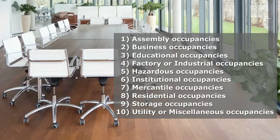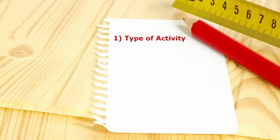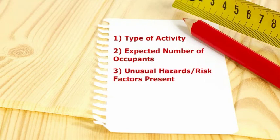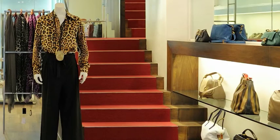Many of these classifications seem self-explanatory, especially if a building type is straightforward. But remember that three things must be known before the occupancy classification can be accurately determined: one, the type of activity occurring; two, the expected number of occupants; and three, whether any unusual hazards or risk factors are present.